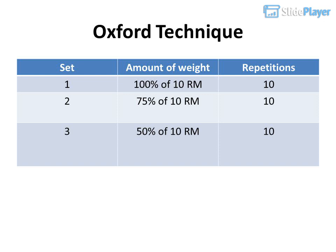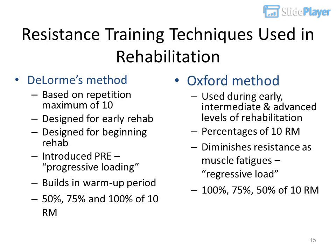Resistance training techniques used in rehabilitation: DeLorme's method is based on a repetition maximum of 10, designed for early rehab, introducing progressive loading and building in a warm-up period at 50%, 75%, and 100% of 10RM. Oxford method is used during early, intermediate, and advanced levels of rehabilitation, using percentages of 10RM and diminishing resistance as muscle fatigues — a regressive load approach at 100%, 75%, 50% of 10RM.